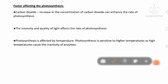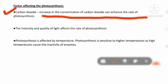Now, the factors that affect photosynthesis. First factor: carbon dioxide. An increase in the concentration of carbon dioxide can enhance the rate of photosynthesis. Carbon dioxide is an important factor — if its concentration increases, the rate of photosynthesis also increases. If sufficient CO2 is available in the atmosphere, photosynthesis will occur properly because CO2 is reduced to form food for the plant.